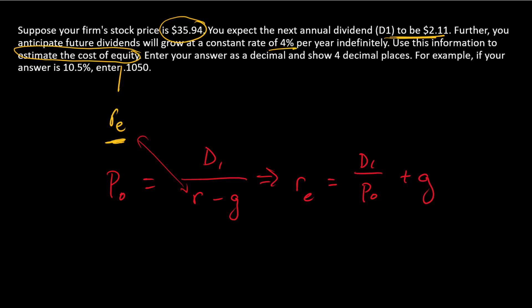Now, we've got all of these numbers in our problem above. So we know that D1 is $2.11. The current price is $35.94. And this constant growth rate is 4%. Plug all those numbers in. And we have 0.0987.